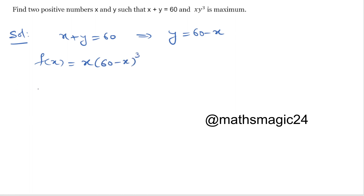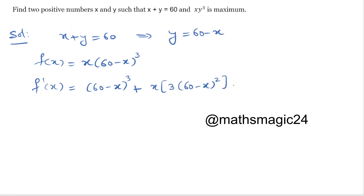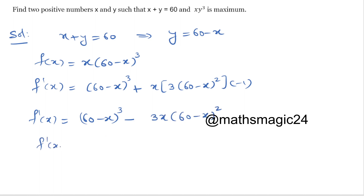Let us differentiate both sides. Using the product rule, f'(x) equals 1 times (60 minus x)³ plus x times the derivative of (60 minus x)³, which is 3 times (60 minus x)² times minus 1. This gives f'(x) equal to (60 minus x)³ minus 3x times (60 minus x)².